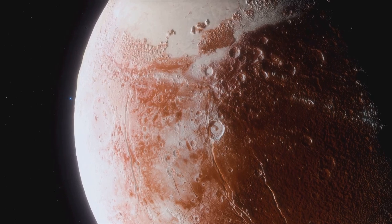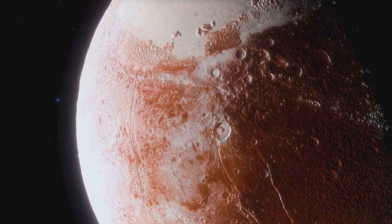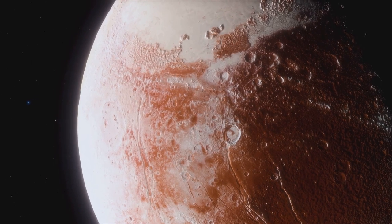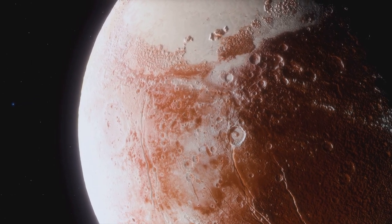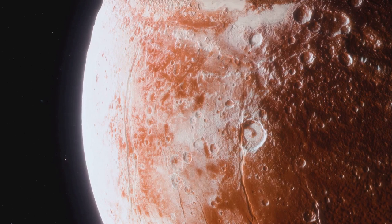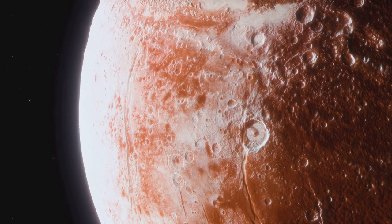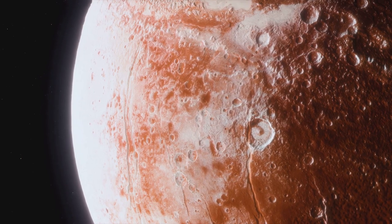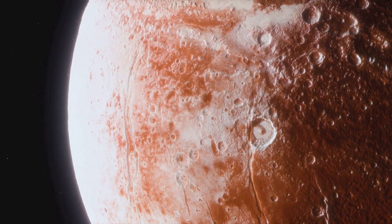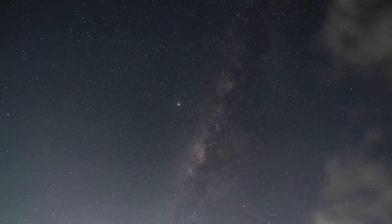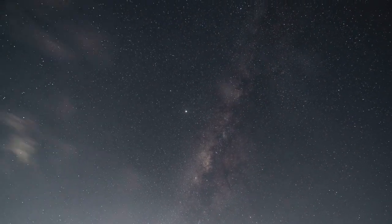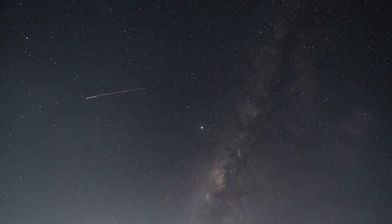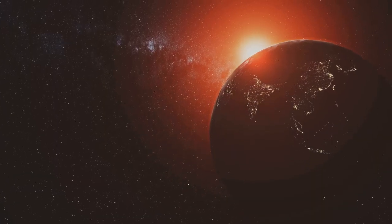Beyond Neptune, we enter a region known as the Kuiper Belt, home to many small icy bodies, as well as two recognized dwarf planets, Pluto and Eris. Even further out, stretching almost halfway to the nearest star, is the Oort Cloud, a theoretical cloud of icy bodies that is believed to be the source of long-period comets. So, from the radiant Sun to the distant reaches of the Oort Cloud, our solar system is a diverse and dynamic place. It's a testament to the beauty and variety that can be found in the cosmos.